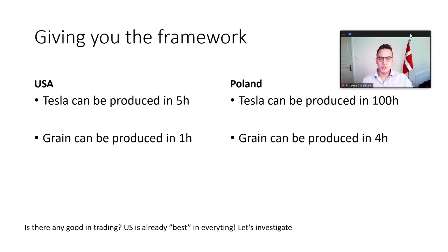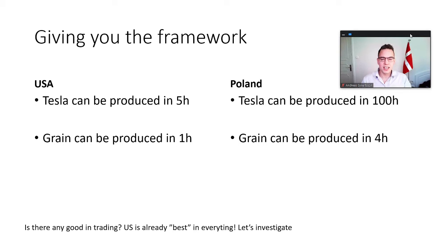I will simplify a model here and exemplify it to really drill the concept in. Let's say that in an economy there are only two countries: the US and Poland. And there are only two types of goods: Teslas and grain. The US can produce a unit of Tesla in 5 hours and a unit of grain in 1 hour. For Poland, they can produce a unit of Tesla in 100 hours and a unit of grain in 4 hours.